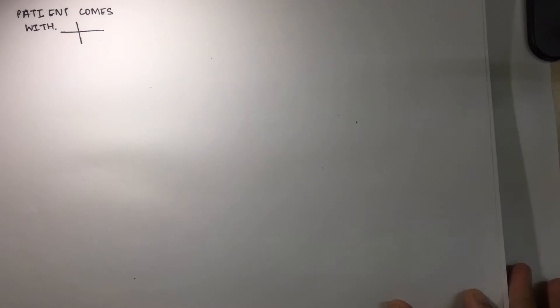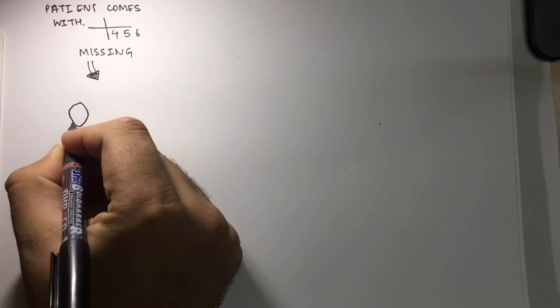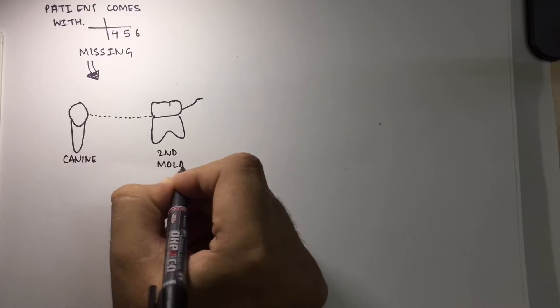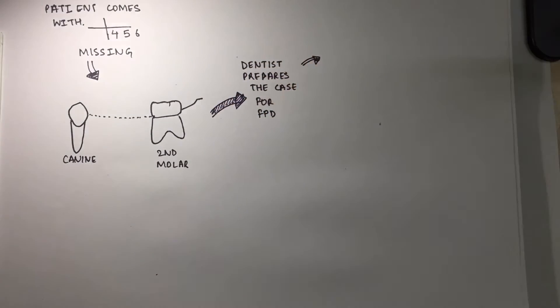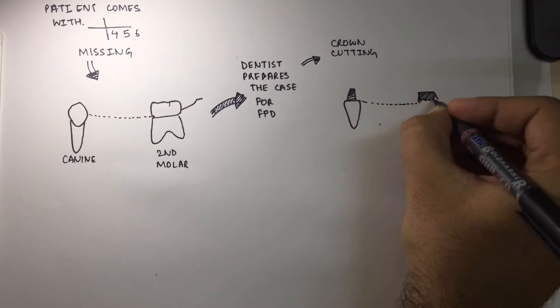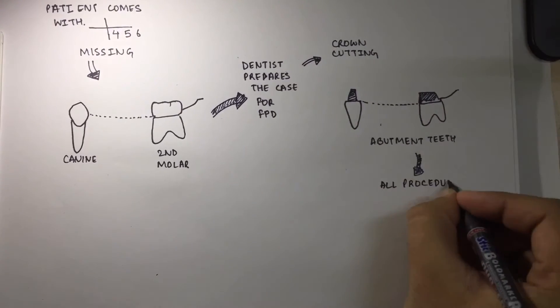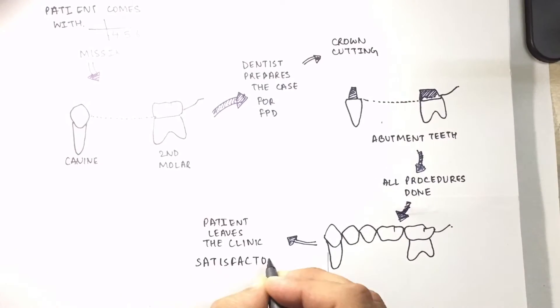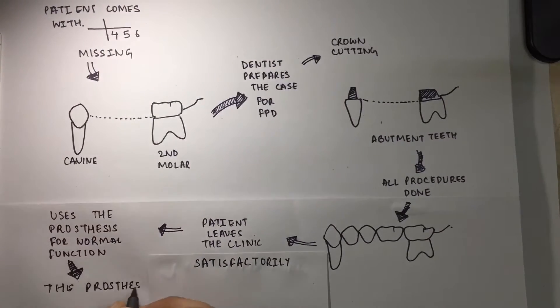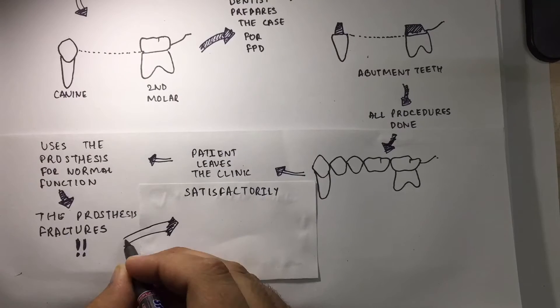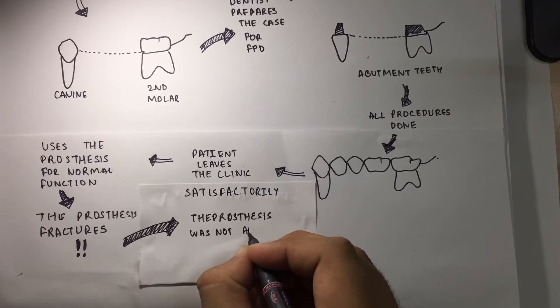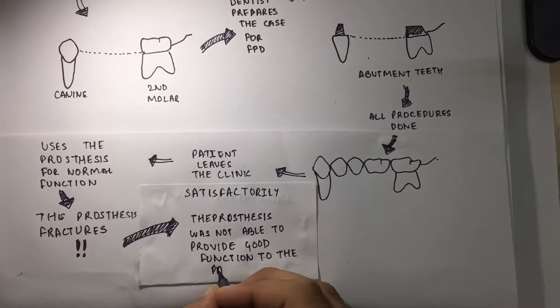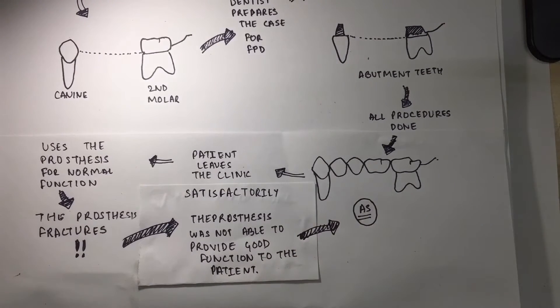Let us understand this with an example. A patient comes with missing mandibular teeth four, five, and six, with the canine and second molar remaining as support. The dentist prepares the case for FPD, does the crown cutting, and performs all procedures to replace the two premolars and a molar. After some days of normal function, the patient comes back with a fractured prosthesis, as it was not able to provide good function.